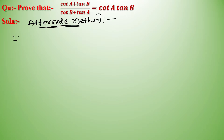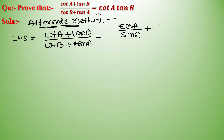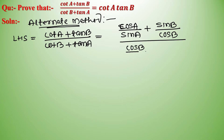Alternate Method: We will change the T-ratios to sin and cos terms. So LHS = (cot A + tan B) / (cot B + tan A), which becomes (cos A/sin A + sin B/cos B) / (cos B/sin B + sin A/cos A).